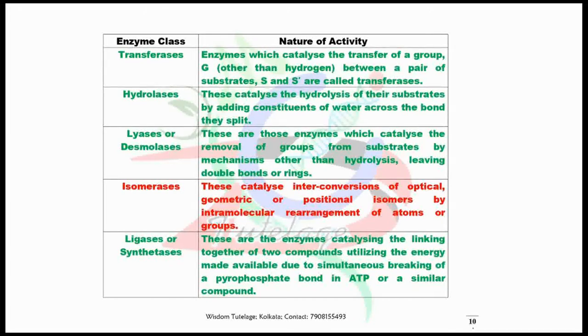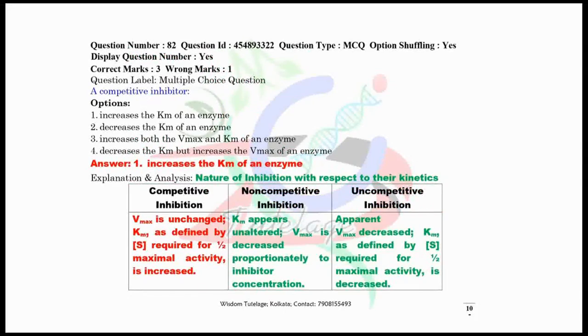Question number 82, a competitive inhibitor always increases the Km of an enzyme. I have given here the comparative analysis of the competitive, non-competitive, and uncompetitive inhibition. Go through this chart very well. This time a competitive inhibitor is the question, but in your upcoming future exams, non-competitive and uncompetitive inhibition may be present in your question paper.